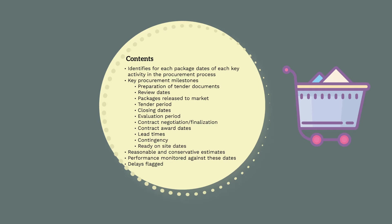Reasonable and conservative estimates need to be allowed for in calculating the duration of these activities. It's better to have more contingency rather than less, as there are always unforeseen circumstances that arise on projects. The procurement schedule also serves as a baseline for monitoring actual performance against planned performance. This allows any delays to be flagged early and appropriately managed. For example, if there are delays in the design, we can instantly see the effect on procurement and then construction.